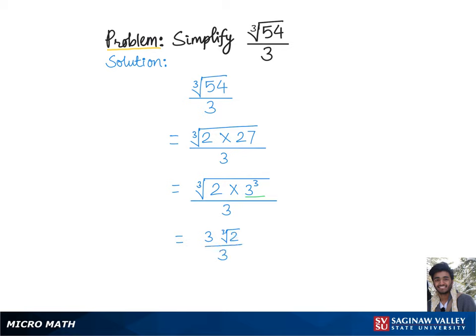Now these 3's cancel each other out since one is in the numerator and one is in the denominator, so we are left with cube root of 2, which is the final answer.